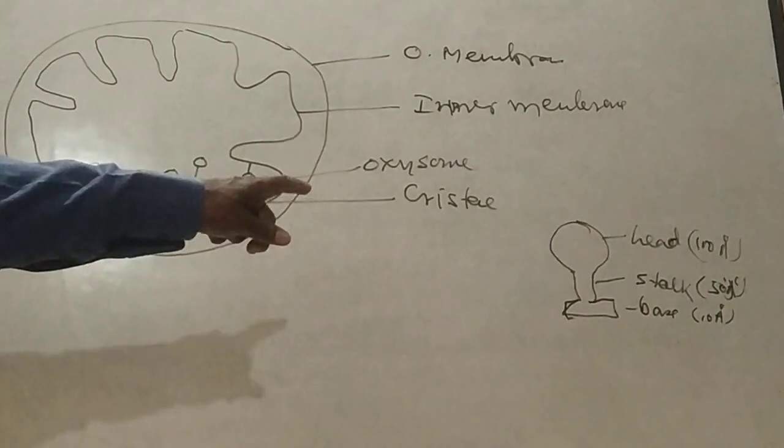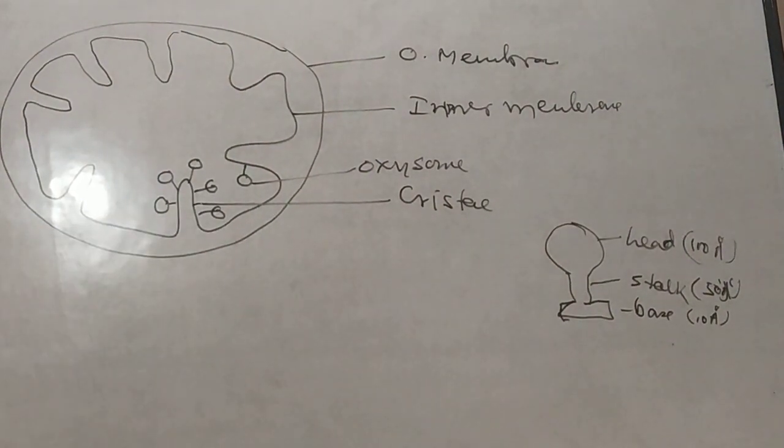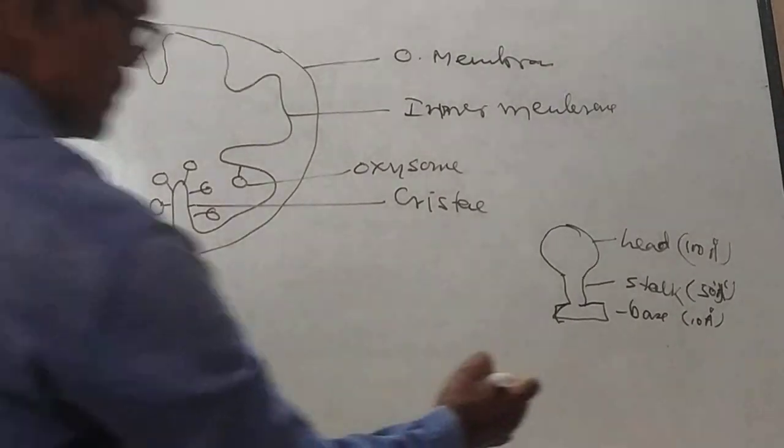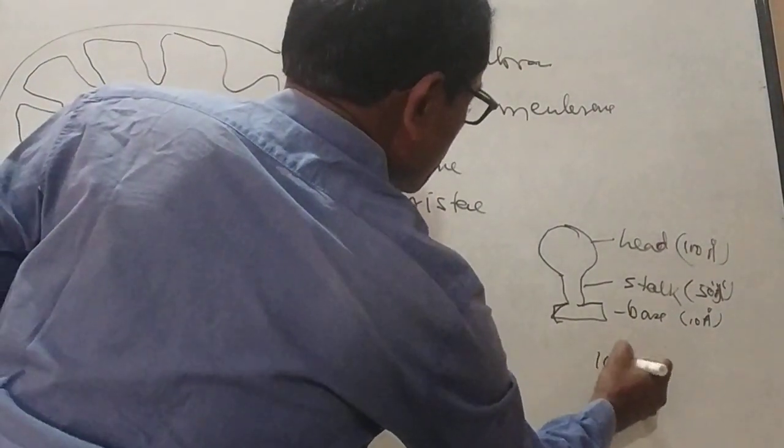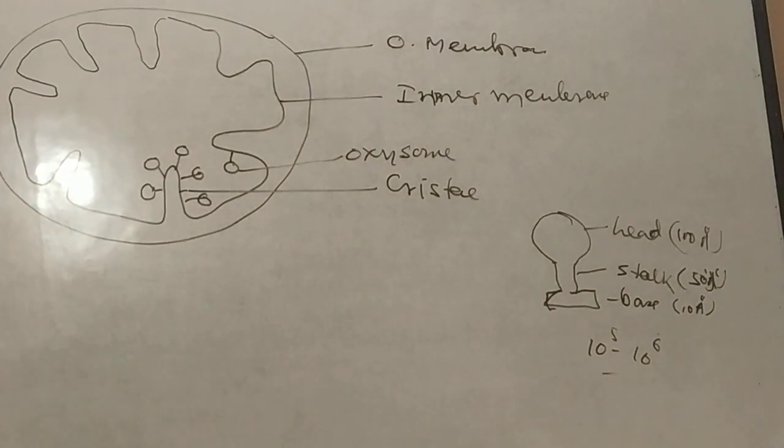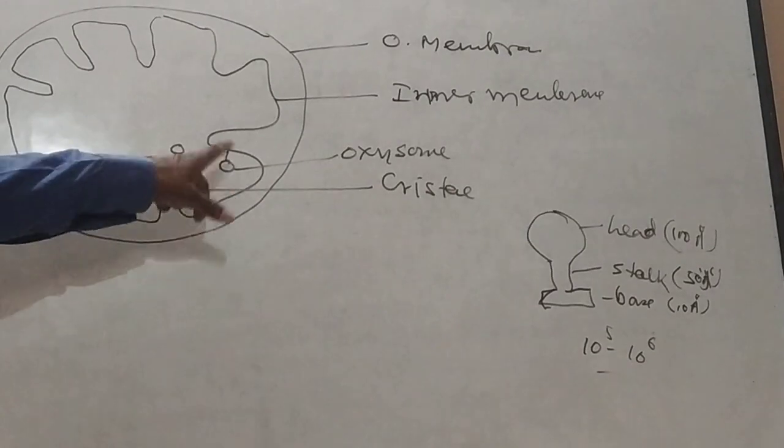That is the mitochondrial particles and the number of particles in each mitochondria will be 10 to the power 5 to 10 to the power 6 in number. These are arranged on the inner membrane.